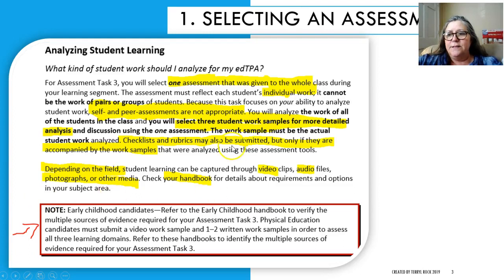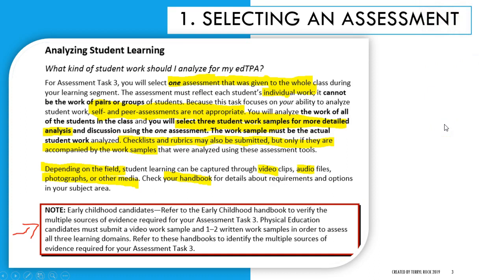Step one is selecting an assessment. There's always some consternation about what type of assessment you should choose. You definitely want to make sure that you choose an assessment that's given to the whole class during the learning segment that you teach. This should be an assessment on the central focus of your learning segment. It should be a formal assessment — it does not have to be summative, it could be formative. However, it does need to be formal. It needs to reflect each student's individual work, so it can't be work done in pairs or groups.